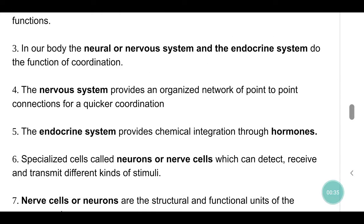In our body, the neural or nervous system and the endocrine system perform the function of coordination. The nervous system provides an organized network of point-to-point connections for quicker coordination. The endocrine system provides chemical integration through hormones. Specialized cells called neurons or nerve cells can detect, receive and transmit different kinds of stimuli.